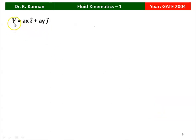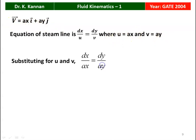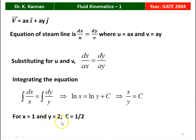The velocity vector is V = AX i + AY j. The equation for the stream line is dx/u = dy/v. From the given equation, u = AX, v = AY. Substituting: dx/(AX) = dy/(AY). A cancels on both sides, giving dx/x = dy/y. Integrating: ln x = ln y + constant C, so x/y = C. For x = 1 and y = 2, C = 1/2. Substituting and rearranging: 2x minus y = 0. That is the answer.